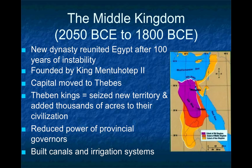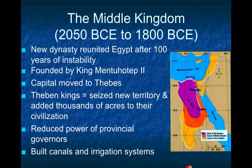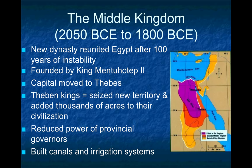The Middle Kingdom started about 100 years after the decline of the Old Kingdom, indicating a roughly 100-year period of instability and civil war following the Old Kingdom's collapse. The Middle Kingdom was founded by the pharaoh Mentuhotep, who moved the capital to Thebes, farther south on the Nile — remember that the capital had been Memphis under the Old Kingdom. Egypt was reunited again under a central government, with Upper and Lower Egypt once more becoming one kingdom.